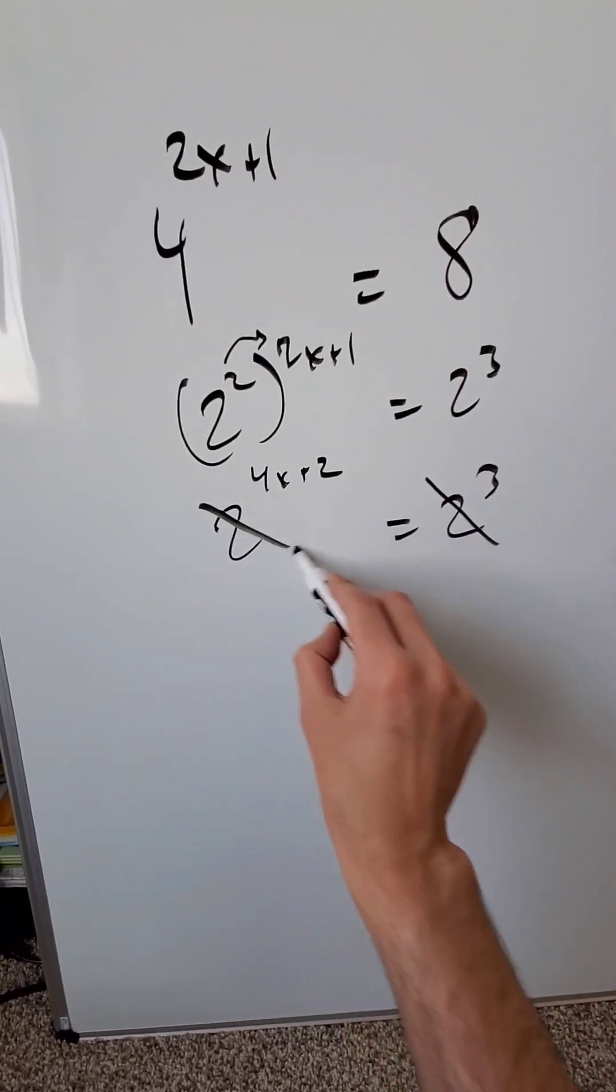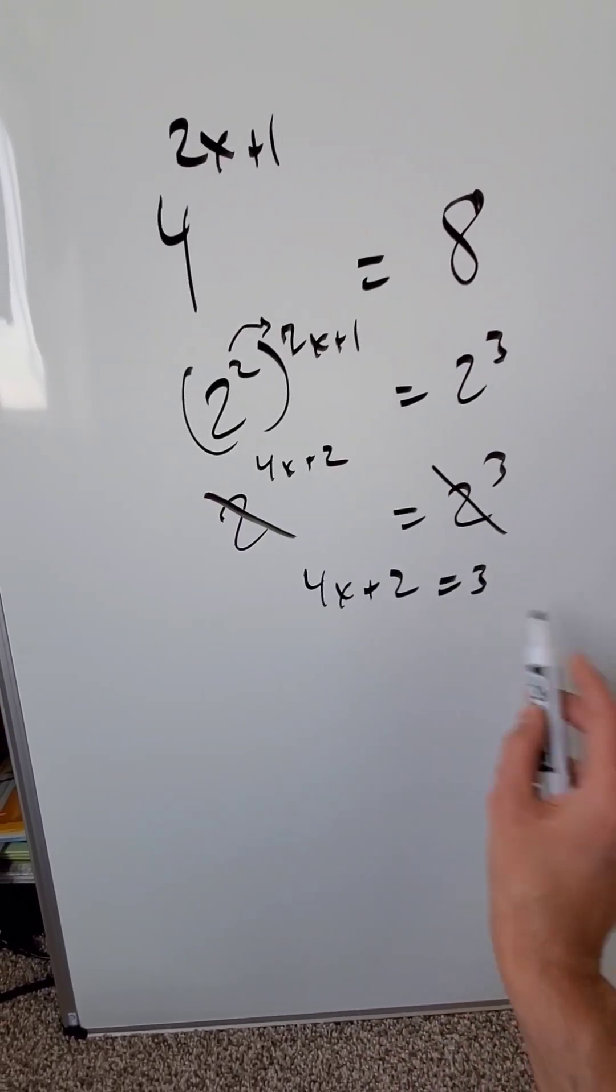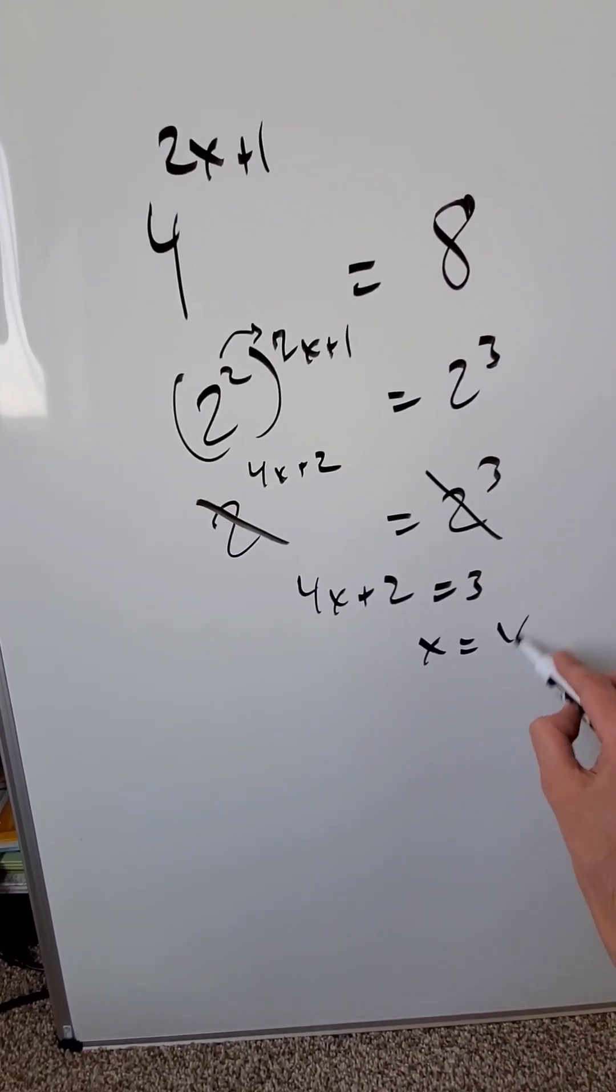You can cancel out these and then your exponents become your new expression and you can solve for x. And you'll have over here 1 over 4.